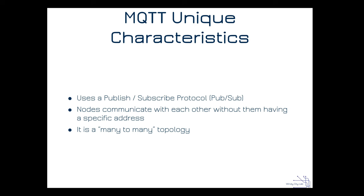MQTT has some unique characteristics. The first is that it's a publish and subscribe protocol — people refer to it in short as PubSub. Essentially, there's no communication from one client to another via an address like an IP address. Clients that are publishing information really don't have any idea how many other clients have subscribed to the message and are getting the data, and vice versa.